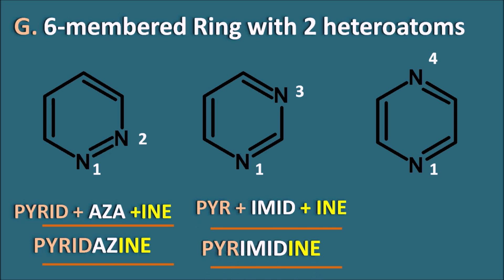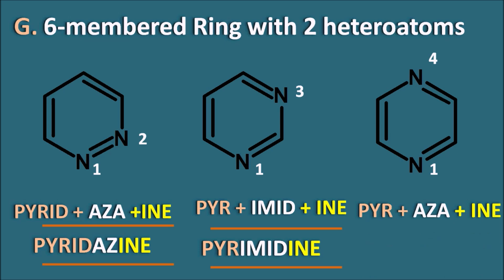Pyrimidine has nitrogens at the first and third positions. For the last one, pyr + az + ine gives pyrazine, where nitrogen is present at the first and fourth positions. To remember: in pyridazine the nitrogen is at the second position so we write 'pyrid', but in pyrazine it is at the fourth position so we take only the prefix 'pyr'. So pyridazine is 1,2 and pyrazine is 1,4. We have three types of six-membered ring systems with two heteroatoms: pyridazine, pyrimidine, and pyrazine.